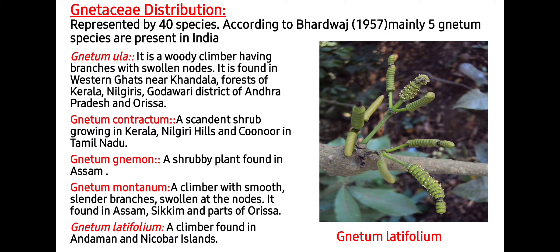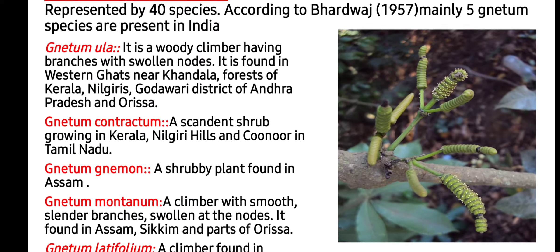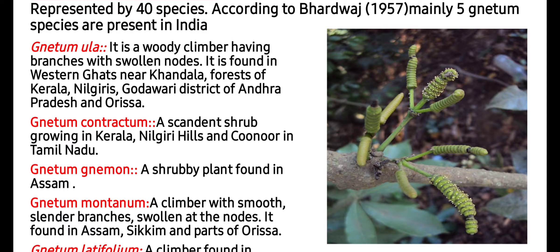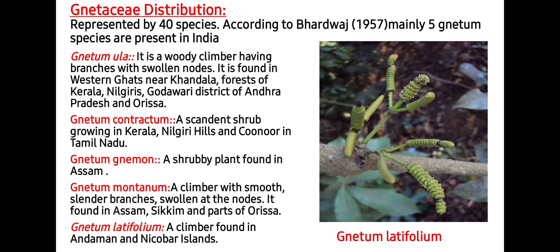Gnetum is represented by 40 species. According to Vasishta in 1957, mainly 5 Gnetum species are present in India. The first is Gnetum ula, a woody climber with branches having swollen nodes, found in the Western Ghats near Gandala, forests of Kerala, Nilgiri, Godavari district of Andhra Pradesh, and Odisha. The second is Gnetum contractum, an ascendant shrub growing in Kerala, Nilgiri hills, and Conoor in Tamil Nadu. The third is Gnetum gnemon, a shrubby plant found in Assam.